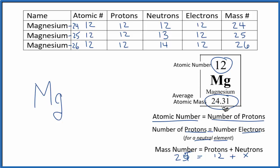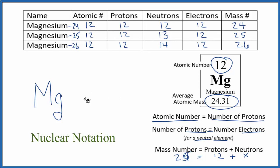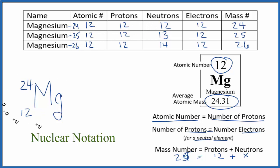We can also write these isotopes in a more specific notation called nuclear notation. For magnesium-24, we put the mass number 24 up top and the atomic number — the number of protons — goes on the bottom. This is a way to show a specific isotope. We have magnesium-25 as well, with the atomic number 12 on the bottom.